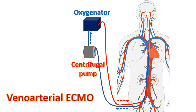eCPR is implemented when there is no prompt return of spontaneous circulation with conventional CPR. In veno-arterial ECMO, the venous blood is removed from a catheter placed in the right atrium through the femoral vein. The blood oxygenated by the ECMO device is returned through a catheter introduced via the femoral artery to the distal aorta. The ECMO device differs from the conventional heart-lung machine setup in that it is portable, applied at bedside, and the catheters are introduced percutaneously or by vessel cut-down instead of after thoracotomy.